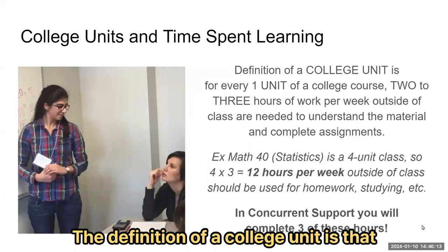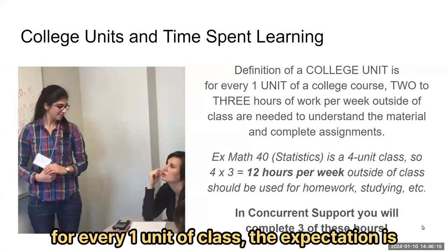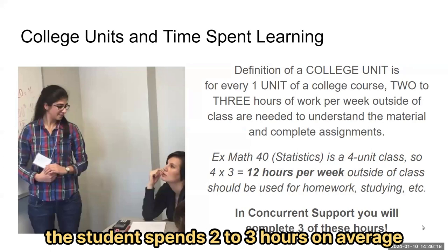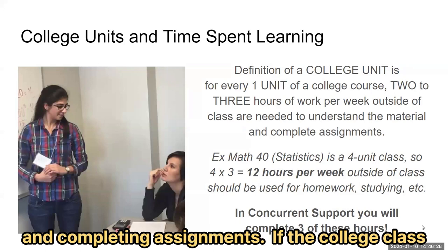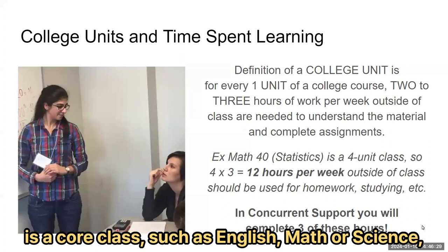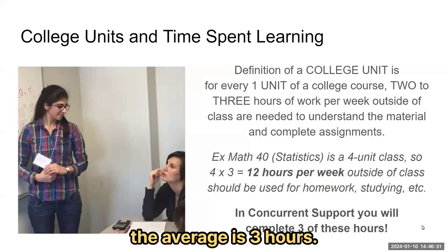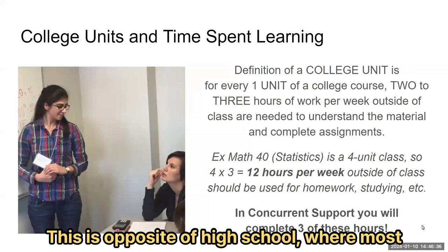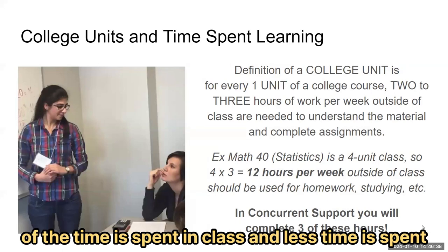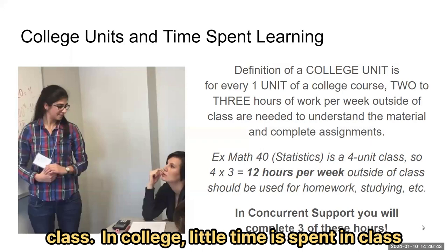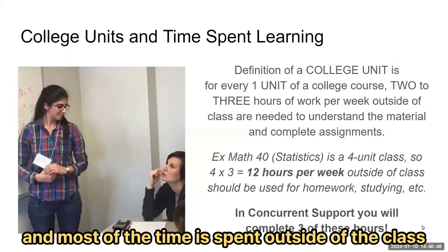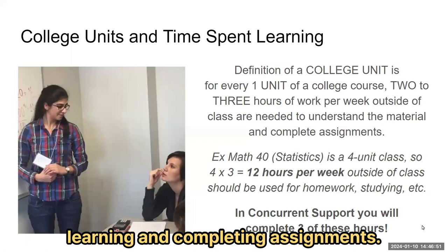The definition of a college unit is that for every one unit of class, the expectation is that the student spends two to three hours on average outside of class understanding the material and completing assignments. If the college class is a core class, such as English, math, or science, the average is three hours. This is opposite of high school, where most of the time is spent in class and less time is spent learning and completing assignments outside of class.